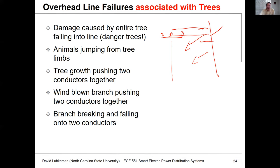If trees are actually growing into the wires, they could push the wires together, which is why we do tree trimming. Utilities usually go out and do extensive trimming every so often — like every two to four years — to keep the branches out of the lines.